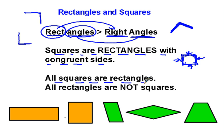All squares are rectangles. Every single square is also a rectangle. All rectangles are not squares. So there are some rectangles that are not squares.